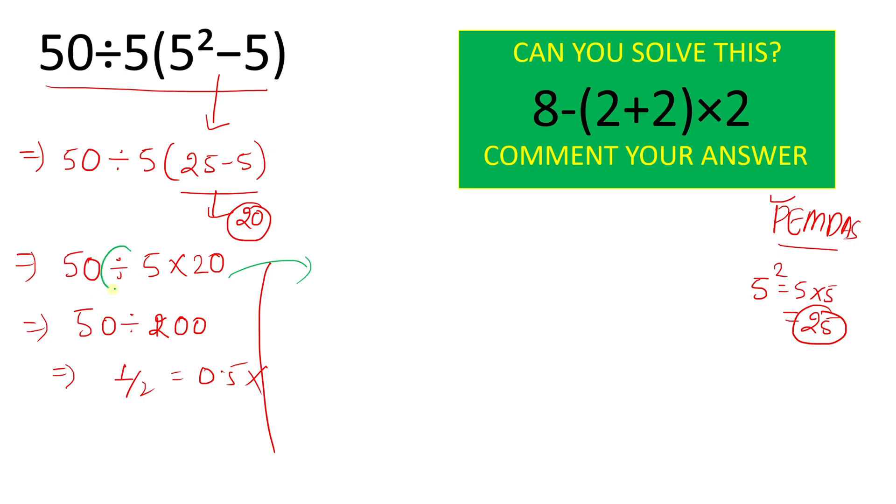Here as we can see two operations are there: division and multiplication. And both have the same priority. And in that case we have to solve left to right. So we will first do this leftmost operation which is division. We will do 50 divided by 5 times 20. We will do this operation which is 50 divided by 5. This will give result 10.